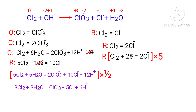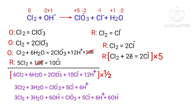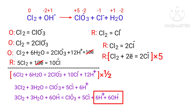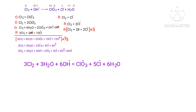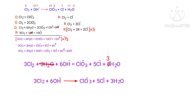For a reaction in a basic medium, add one OH⁻ for every H⁺ present in the equation. The OH⁻ must be added to both sides to keep charge and atoms balanced. Combine OH⁻ and H⁺ that are present on the same side to form water. Now cancel the same terms. The equation is now balanced in a basic medium.